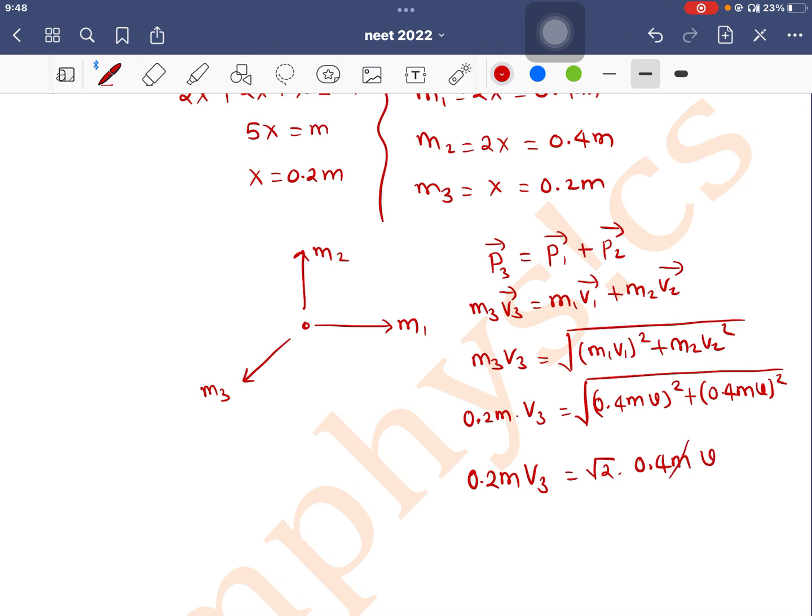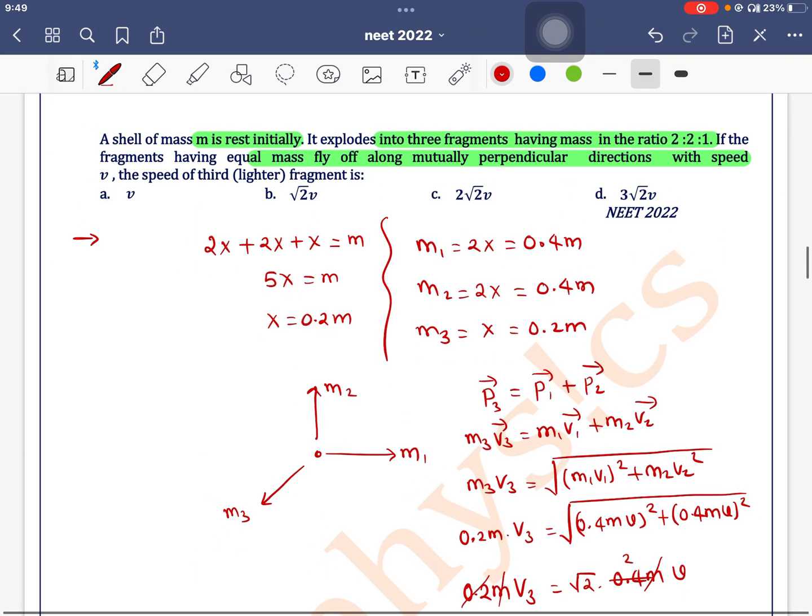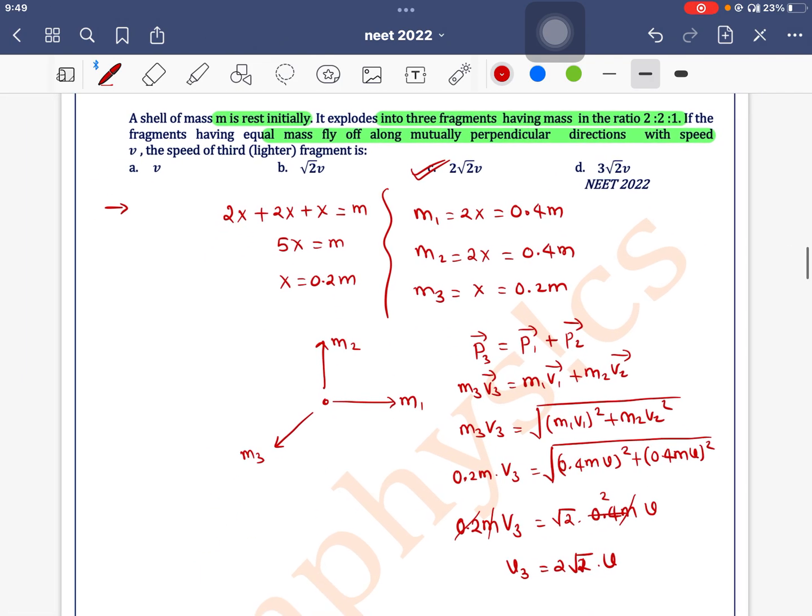This m cancels out, 0.2 and 0.4 cancel out. v₃ = 2√2·v. So option C is the correct one.